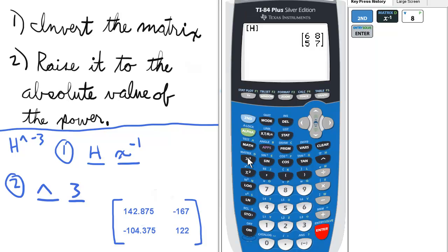To do this, choose the matrix, then press the X to the negative 1 key here in the upper left-hand portion of the keypad, and enter. And that's the inverse of matrix H.